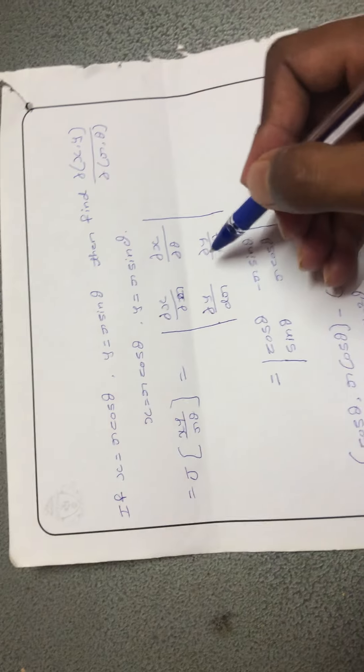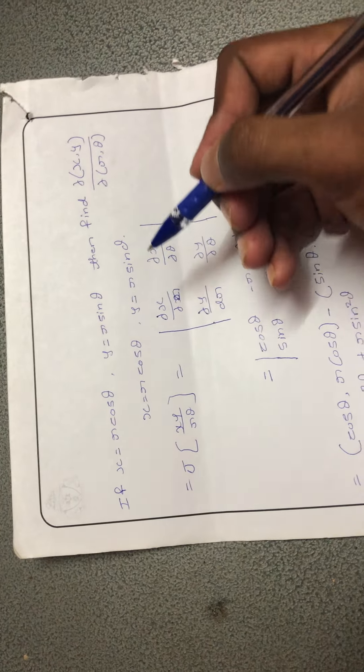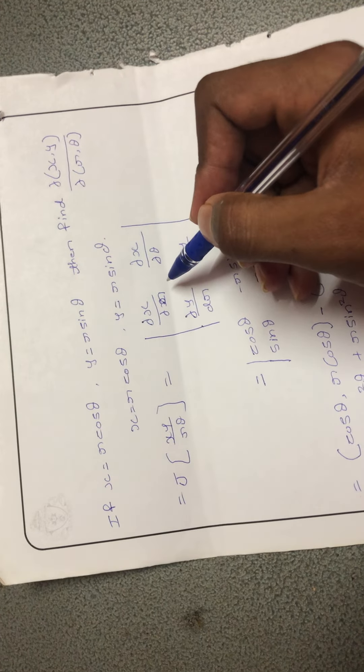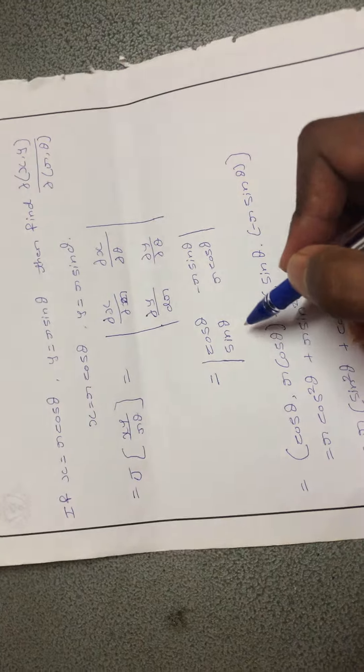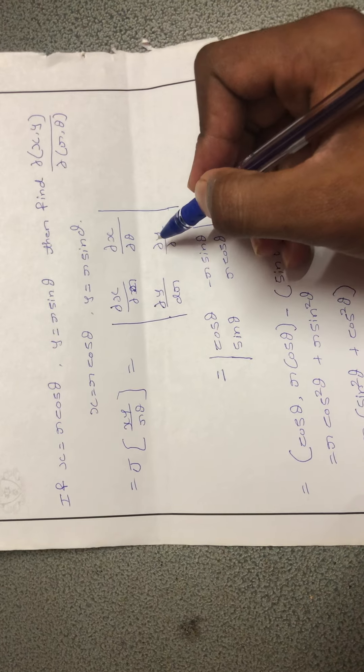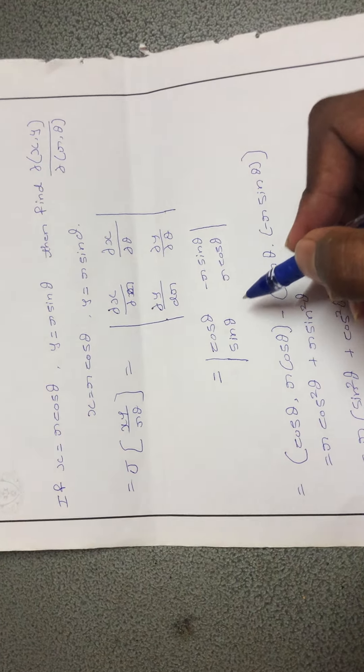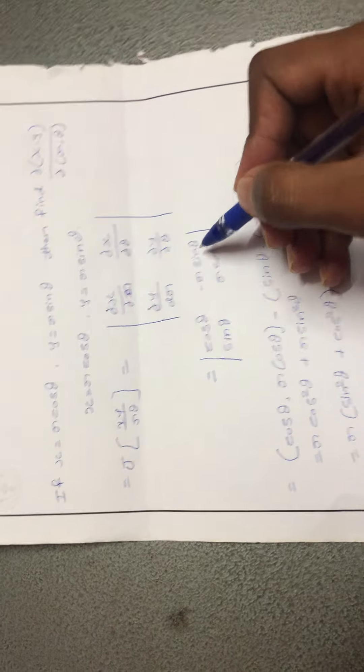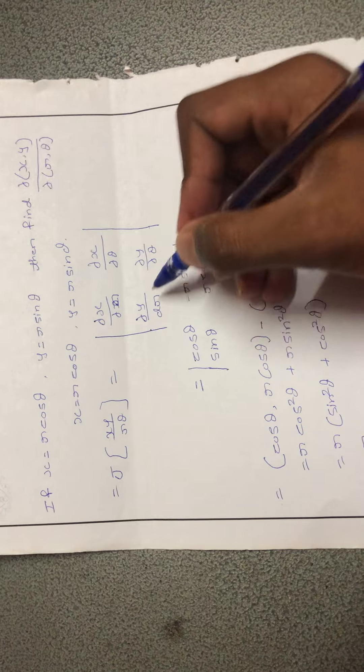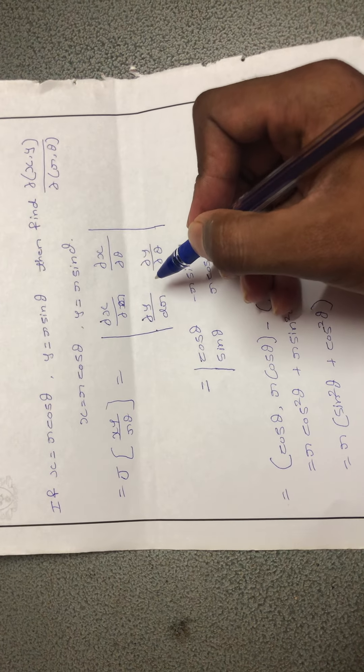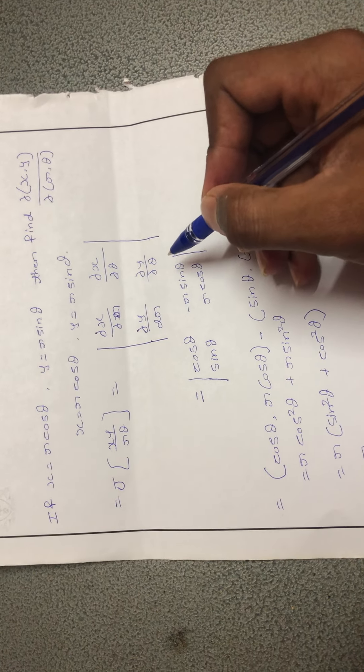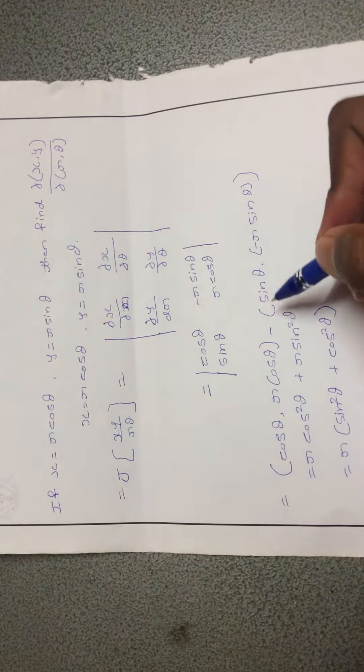First we solve dx by dr with respect to r, then we get cos theta. Then we differentiate with respect to theta, we get minus r sin theta. Then we do dy by dr, which we evaluate to get sin theta, and dy by dtheta we get r cos theta.